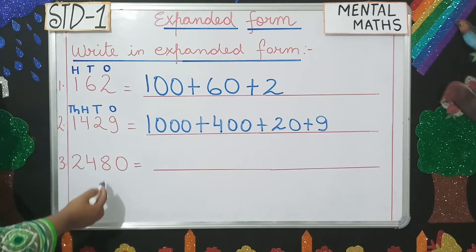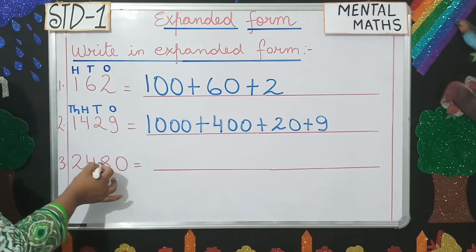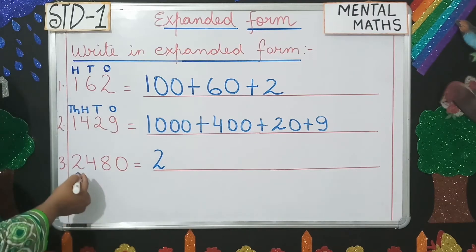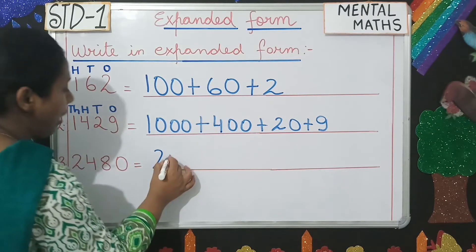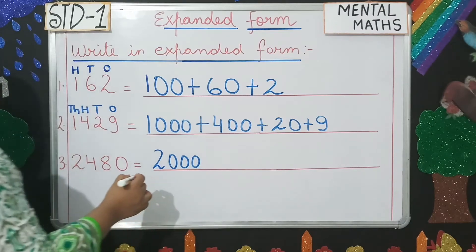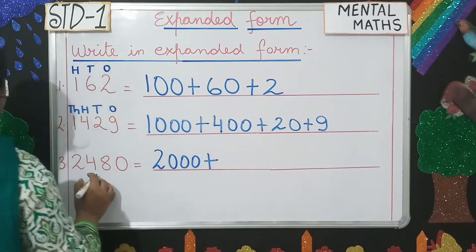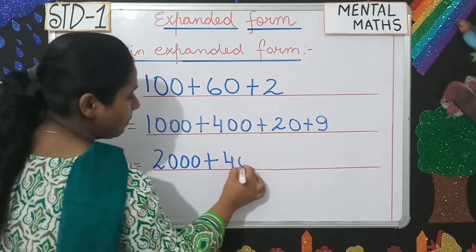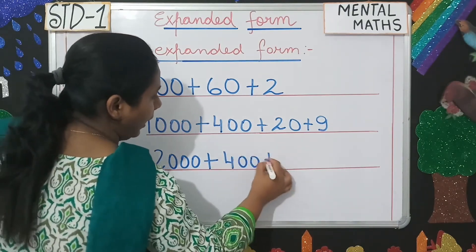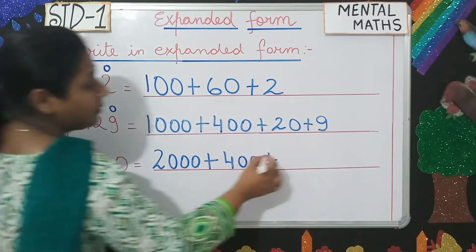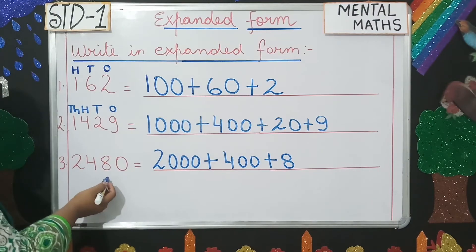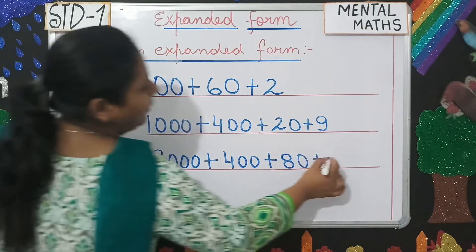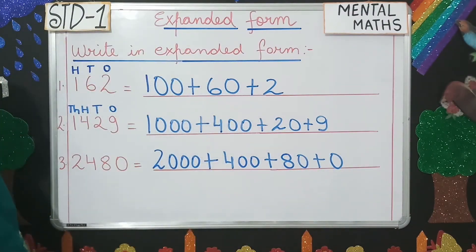Number three: 2, 4, 8, 0. This is the 1s, 10s, 100s, and 1,000s. Similarly, we'll write 2 then add three 0s for the 1,000s place. Then put a plus sign, write the second number 4 and add two 0s for the 100s place. Again a plus sign, then 8 — since this is the 10s place we add one 0. And at last we write 0. Is this clear, students?